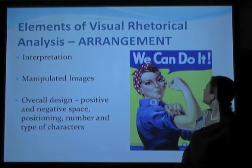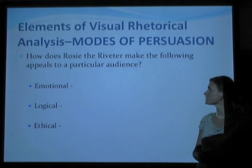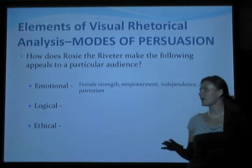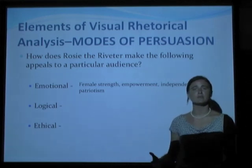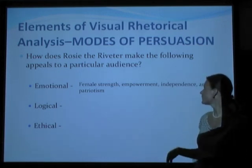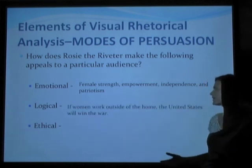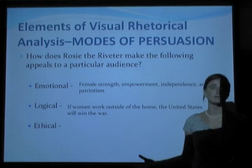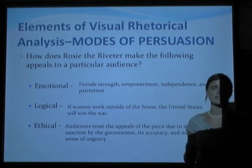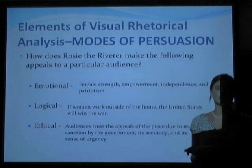Let's take these different characteristics and analyze them in terms of the modes of persuasion. In terms of emotional appeals, we talked about female independence, strength, and empowerment — highly emotional ideas elicited when you look at Rosie — and therefore her argument about female positioning in the workplace is made through patriotism, strength, and independence. The logical argument made by the piece is: if women work outside of the home, then the United States will win the war — that's the major line of reasoning. The ethical appeals are made because it's on stamps, sanctioned by the government, it's a popular idea, and it's urgent, as we notice in that exclamation point at the end of the text on the piece itself.